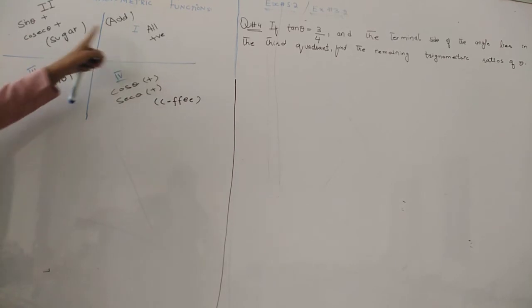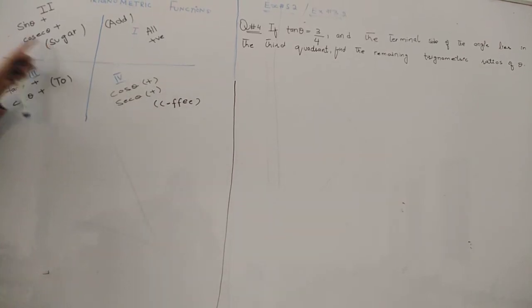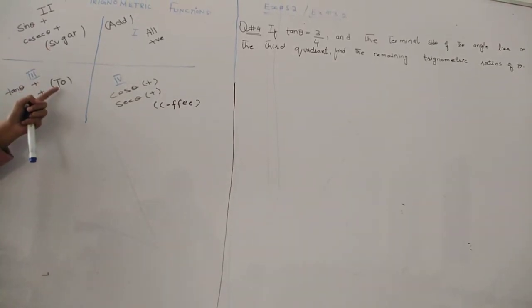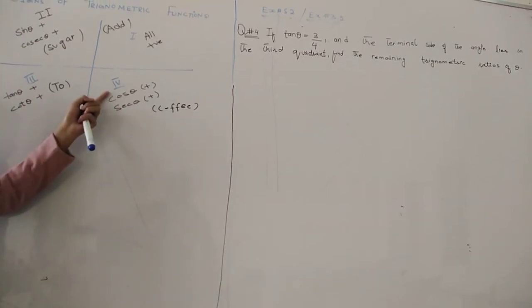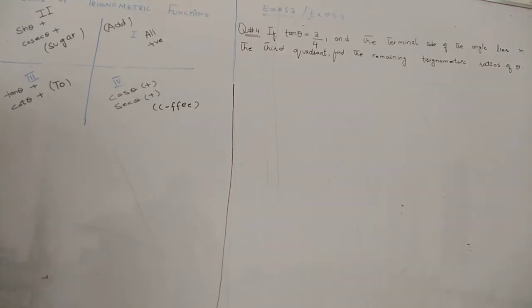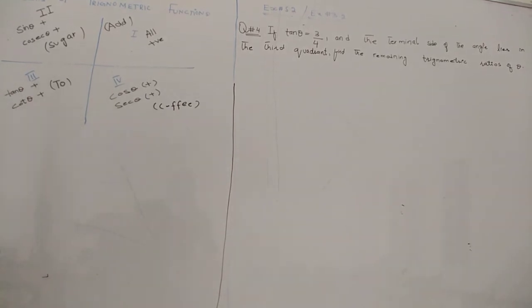Sugar starts with S for sine, and coffee starts with C for cosine. So we can remember: all students take coffee for all positive, sine positive, tangent positive, cosine positive.